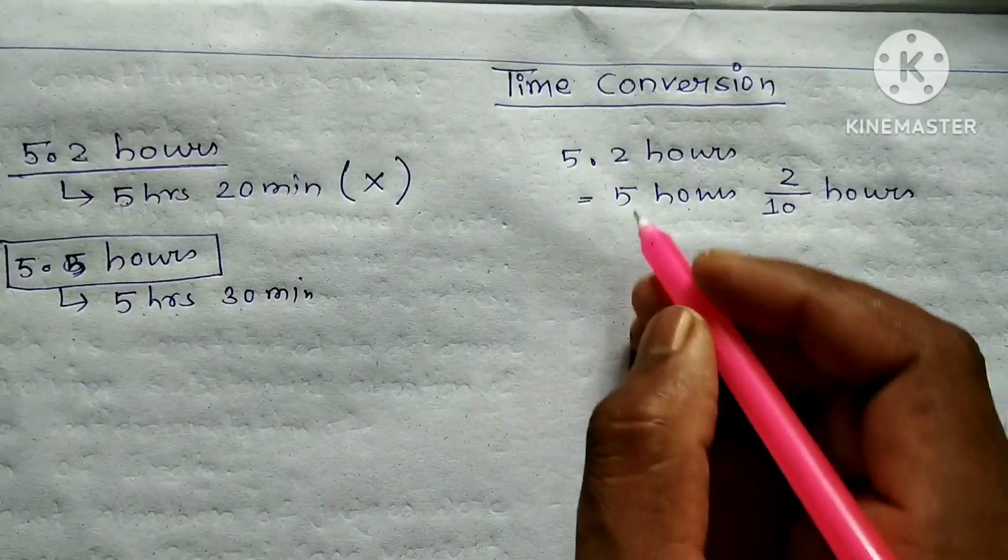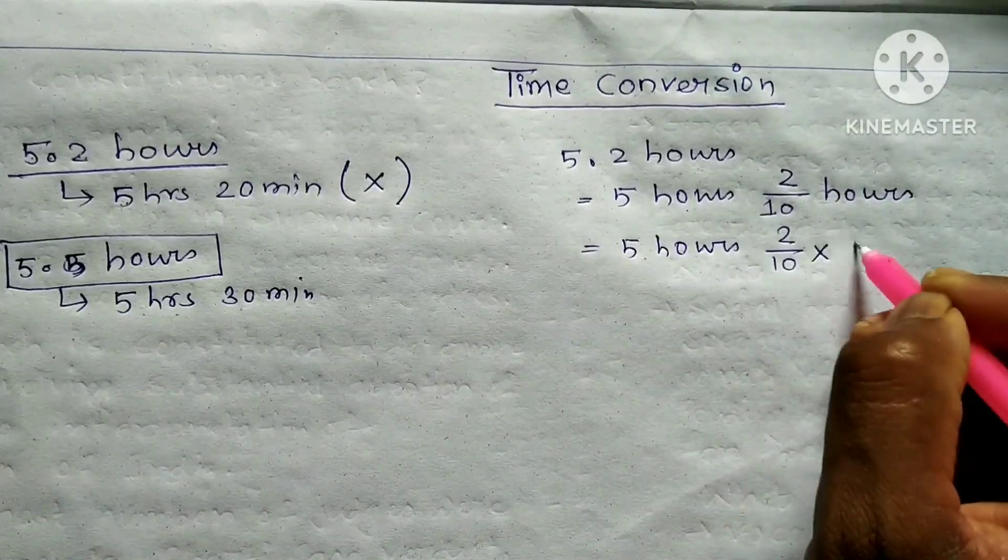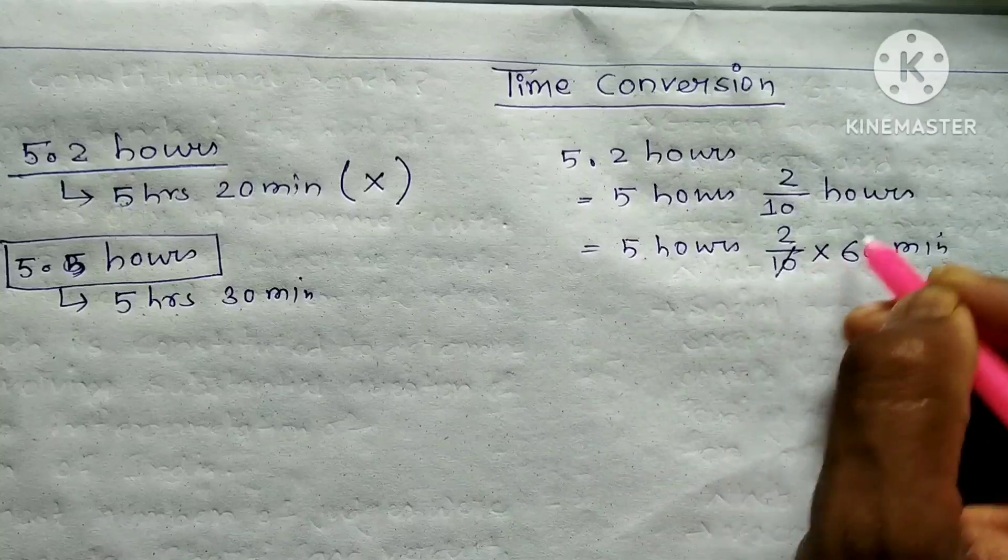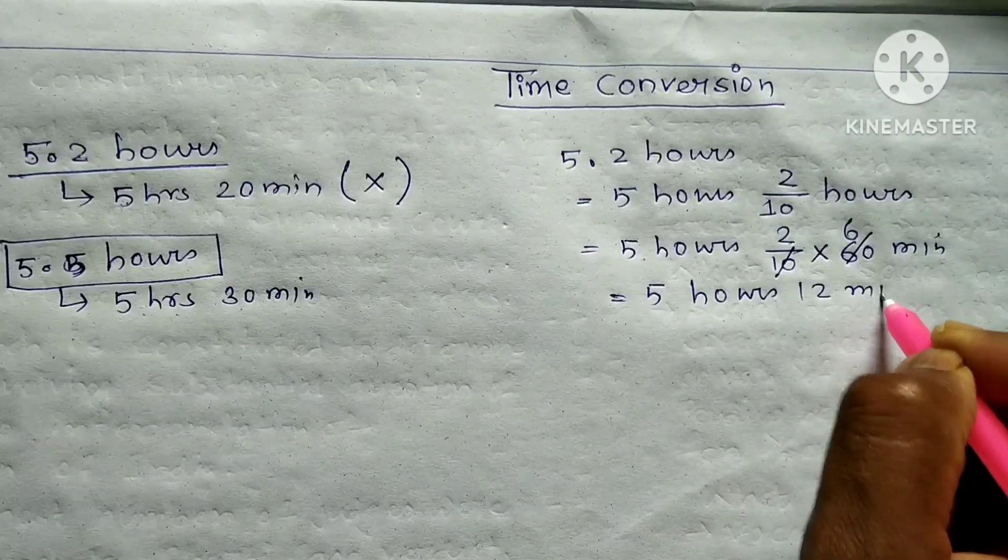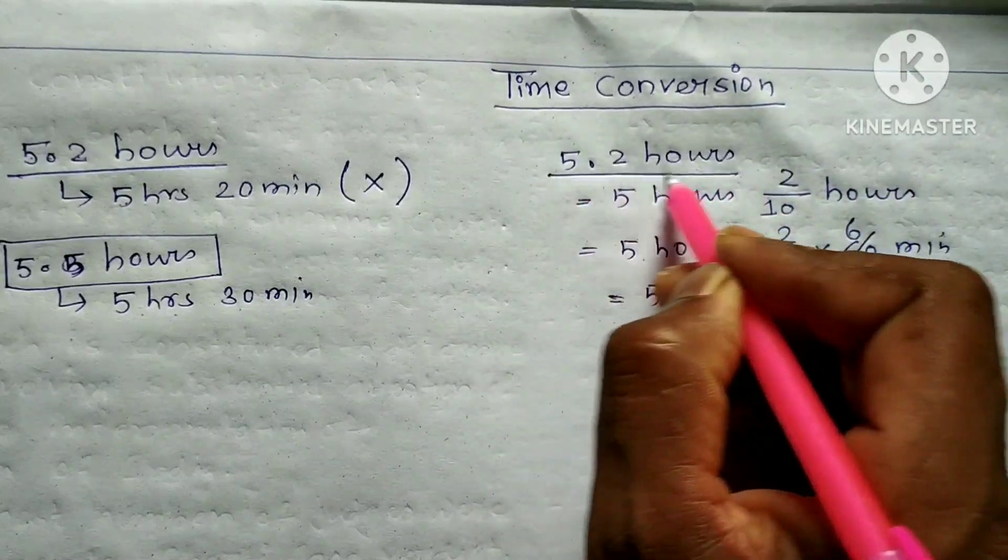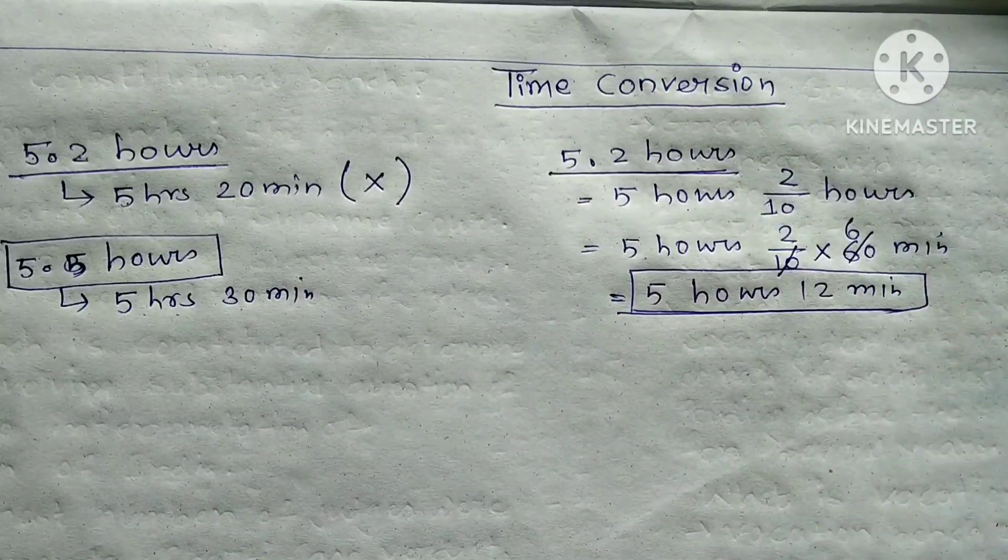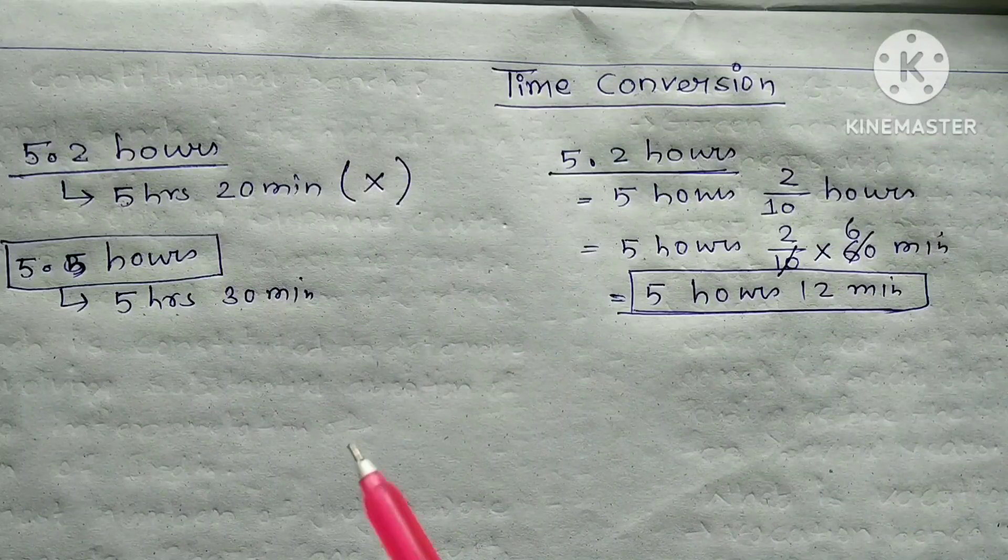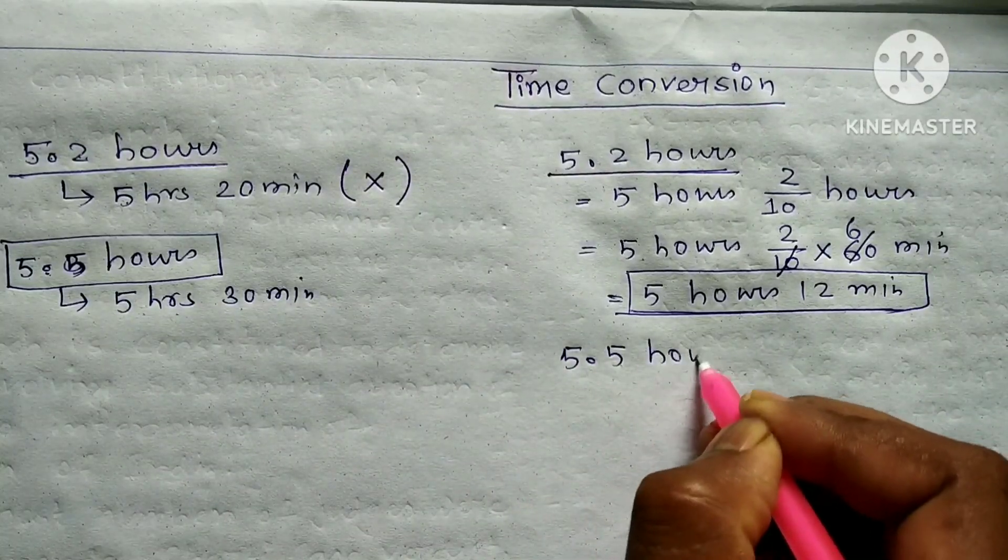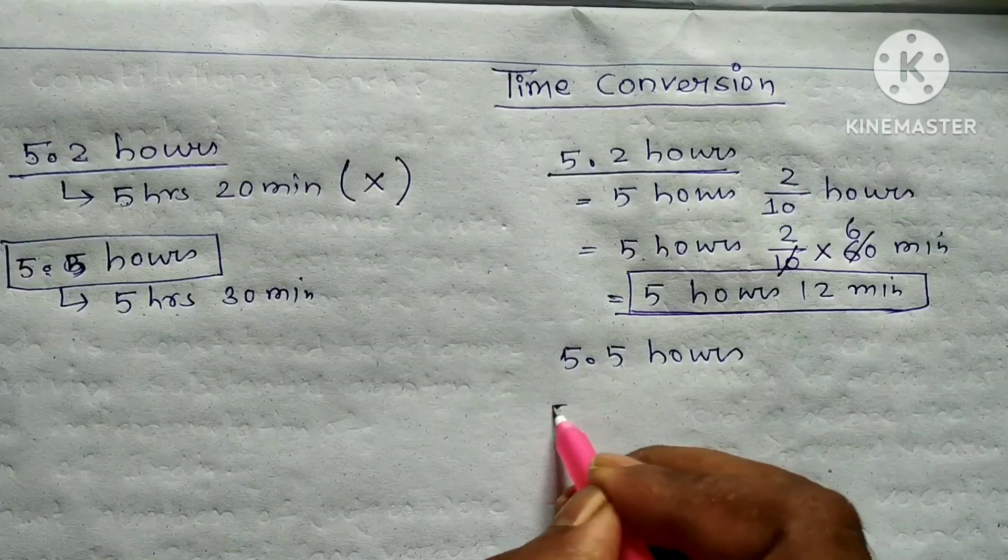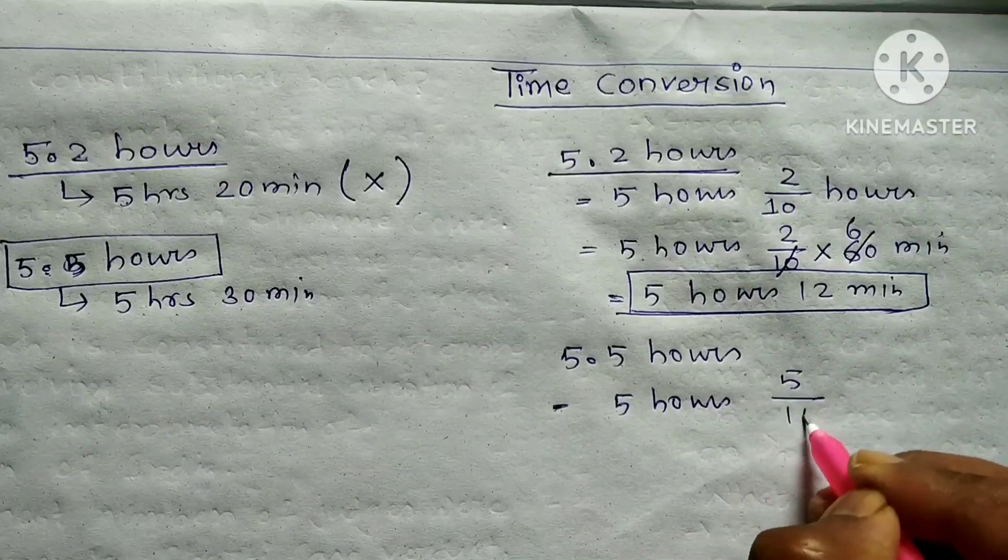The decimal portion needs to be converted to minutes. To convert to minutes, multiply by 60. So 0.2 times 60 gives us the minutes. That's how we get 5 hours, 12 minutes. For 0.5, multiply 5 by 10 hours.